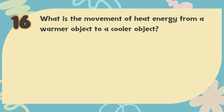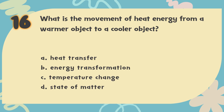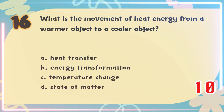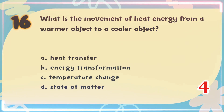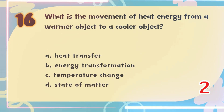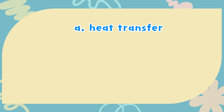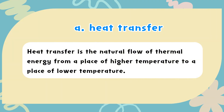Number 16. What is the movement of heat energy from a warmer object to a cooler object? The choices are: A. Heat transfer, B. Energy transformation, C. Temperature change, D. State of matter. The correct answer is A. Heat transfer. Heat transfer is the natural flow of thermal energy from a place of higher temperature to a place of lower temperature.